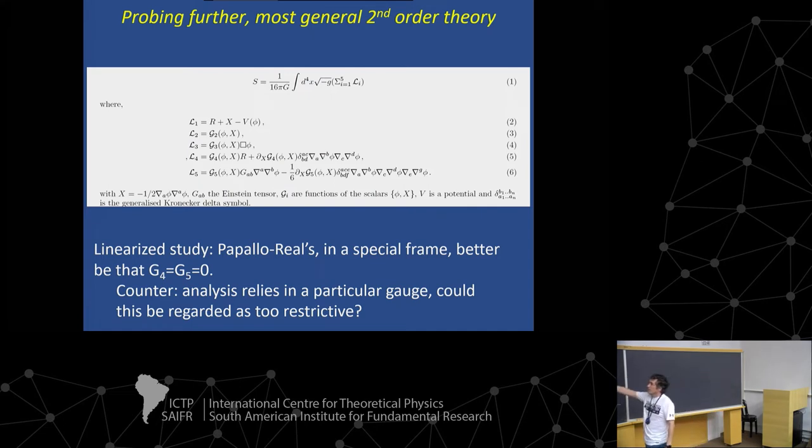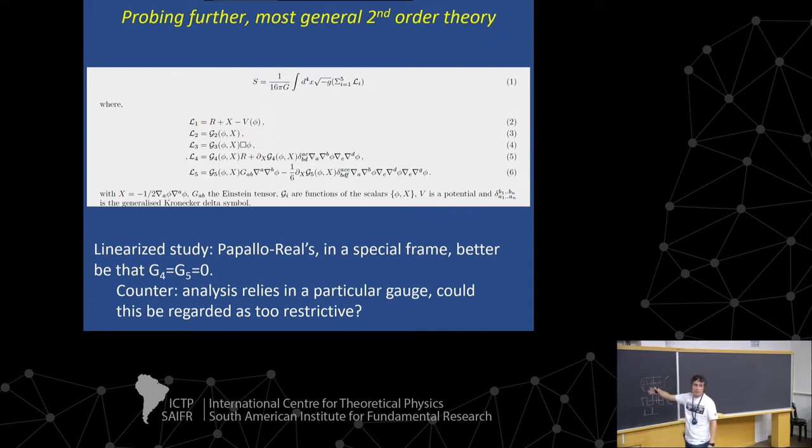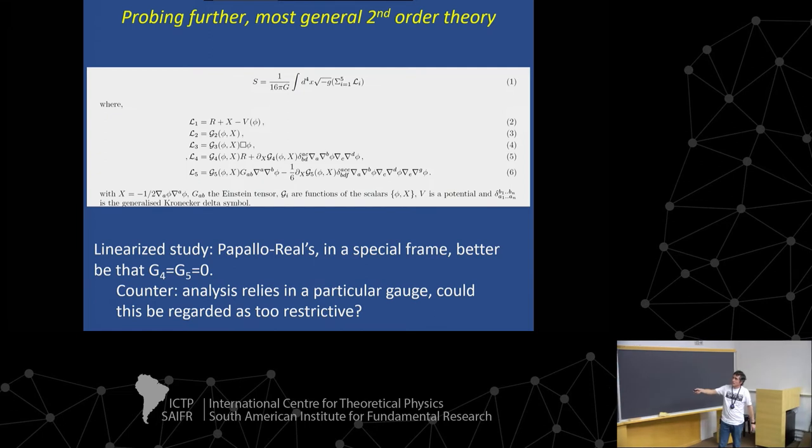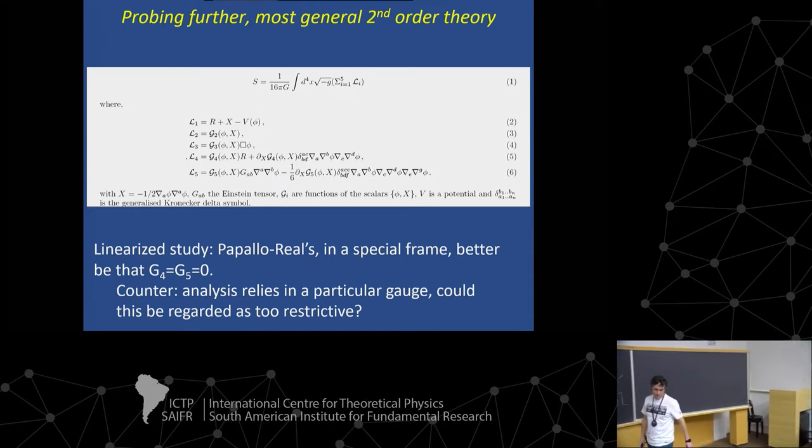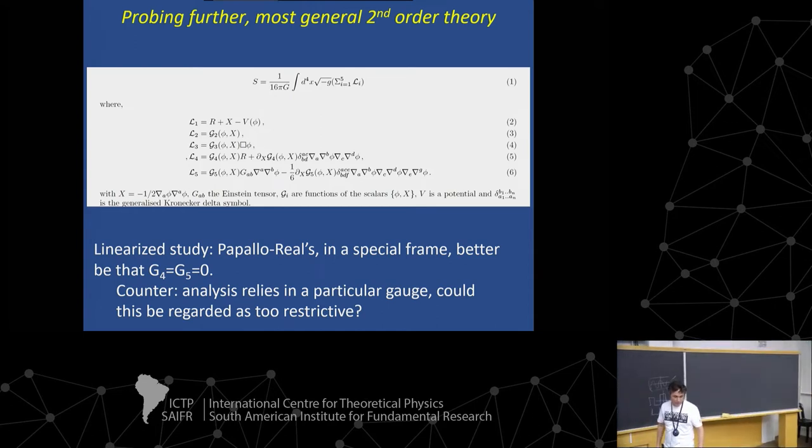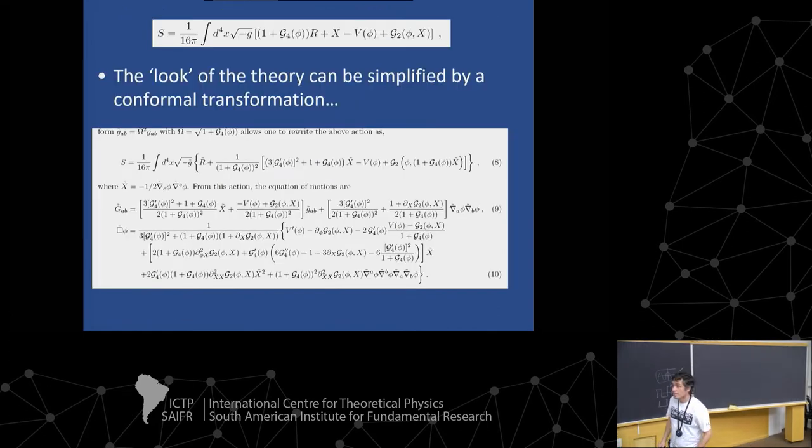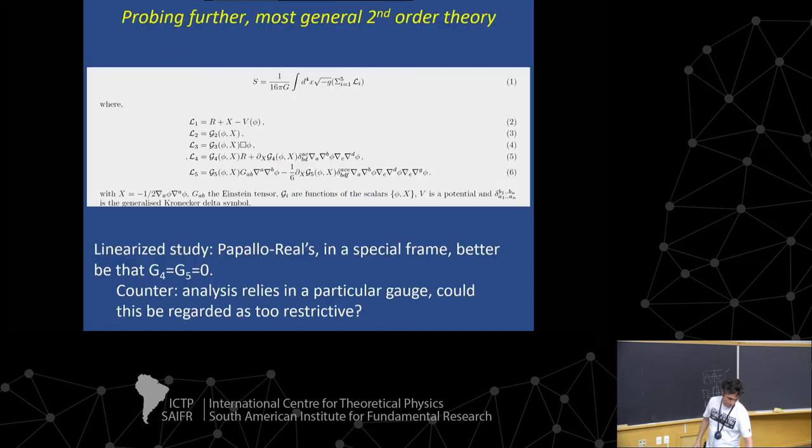But that was a linear regime, and very quickly, people pointed out that Papallo and Reall used a very special frame to do this calculation. Maybe this was a byproduct of having chosen a particular gauge, this frame. Could be, this may be regarded, could these arguments regard the analysis as too restrictive? Yes. No. That's right.